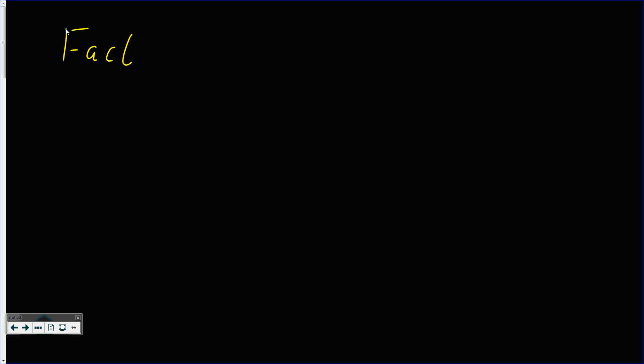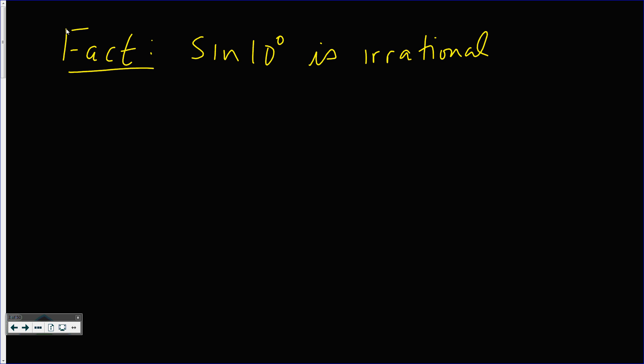In this video, we are going to prove a pretty nice theorem. We are going to show that the sine of 10 degrees must be irrational. How do you show that any number is irrational? We show that it is not rational.